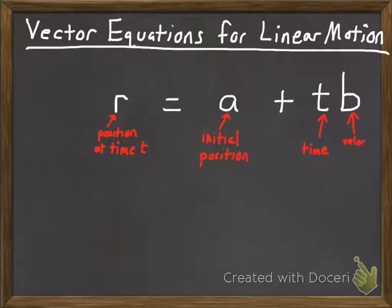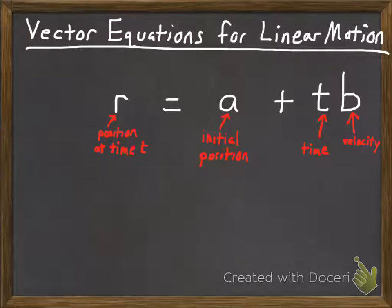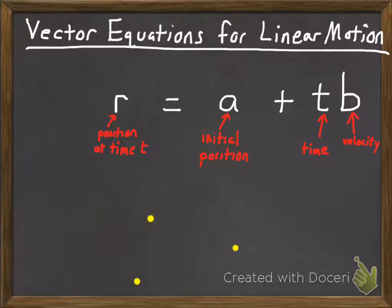Velocity must be a vector because it has both a direction and a magnitude, whereas speed — which we contrast with velocity — doesn't have a direction, so it's just a scalar number. To explain why this equation works, let's look at a diagram. The first point represents the origin.